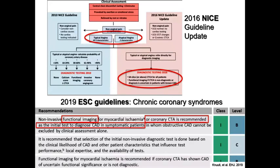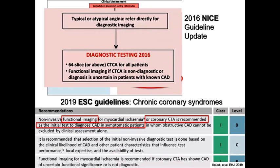Because of these trials, the UK came out with NICE guidelines update stating that in any patients with typical or atypical chest pain, they are referred directly to diagnostic imaging, and the first-line diagnostic test is coronary CTA, followed by functional testing only if the CTA is non-diagnostic or the diagnosis is uncertain. Just a few months ago, the European Society of Cardiology guideline update elevated the indication of coronary CTA from class 2 to class 1, where patients with suspicion for CAD could get either a coronary CTA or a functional stress test.